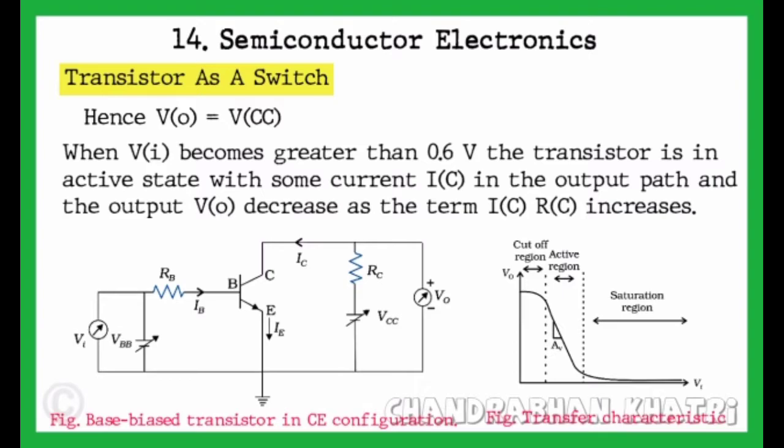When VI becomes greater than 0.6 volt, the transistor is in active state with some current IC in the output path, and the output voltage V0 decreases as the term IC into RC increases.